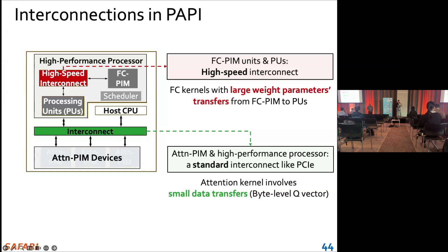Since there is very little data movement — they only require sending the Q vector, which is about a small amount of data — we do not require a very fast interconnect to do that.